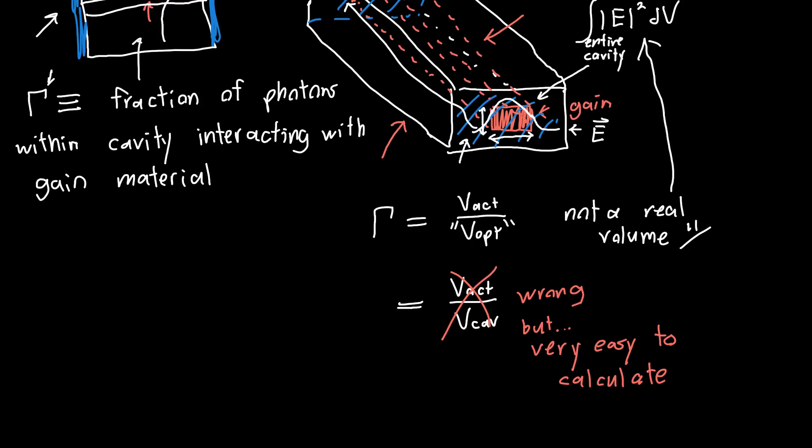So intuitively, you can kind of think of gamma as how good you are at convincing photons to be inside your gain material. Or, as we've just defined above, the fraction of the photons that are interacting with your gain material. So a high confinement factor, for example, like 0.7 or 0.9, or even 1, means that all of your photons are within your gain material. And so you've got very good confinement. Your electric field profile might look something like this, if this is your active region.